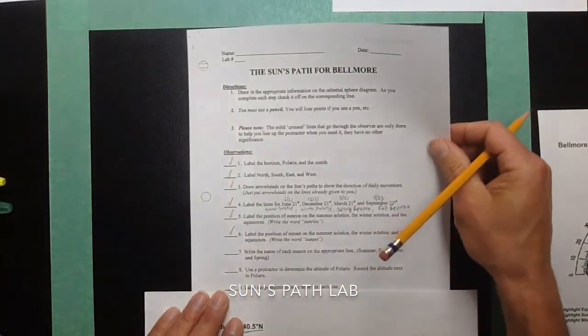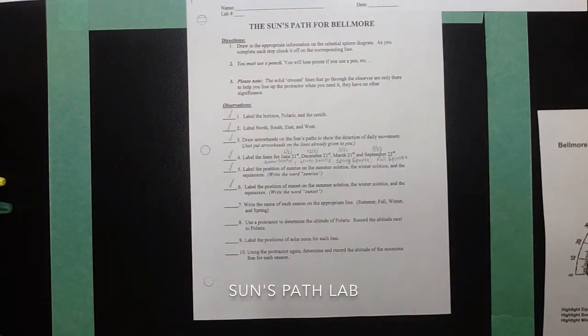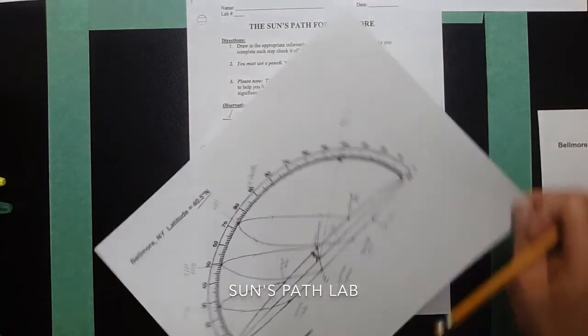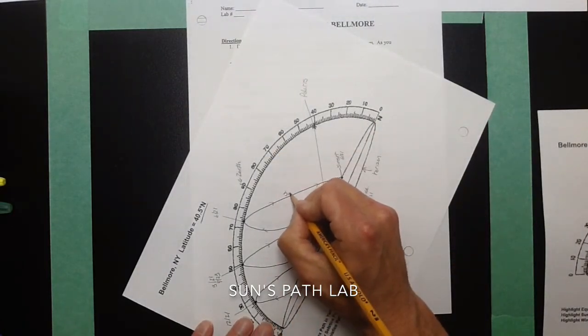All right. So we can check off number six. Number seven. Write the name of each season on the appropriate line. So we want summer, winter, spring, and fall. So I'm going to turn it a little sideways so it's easier to write.